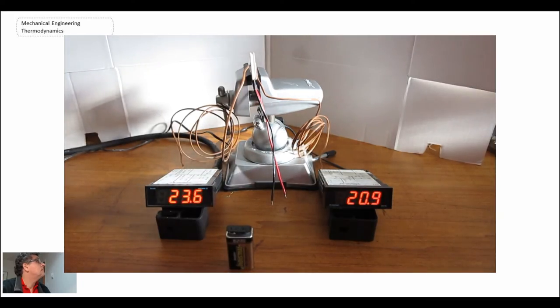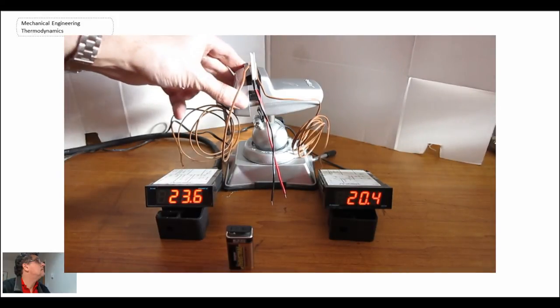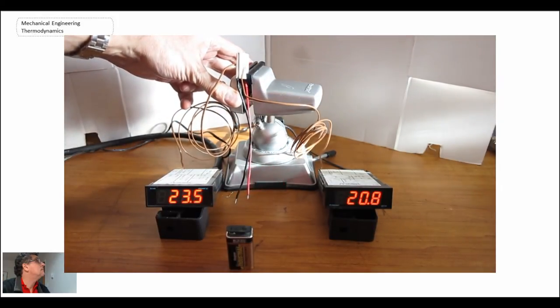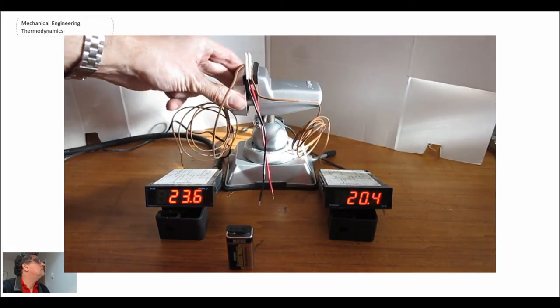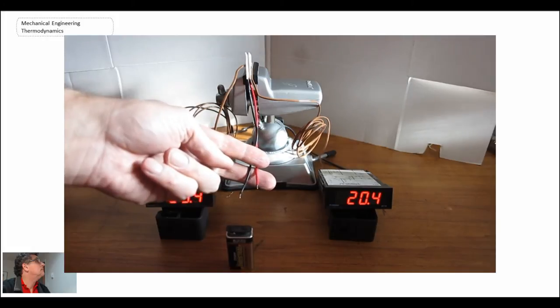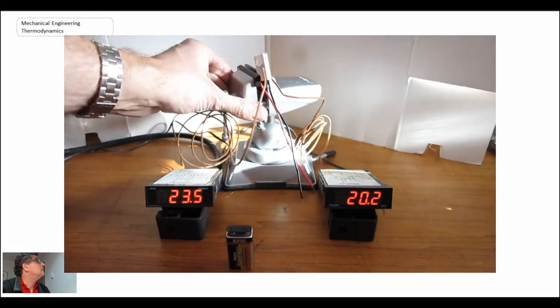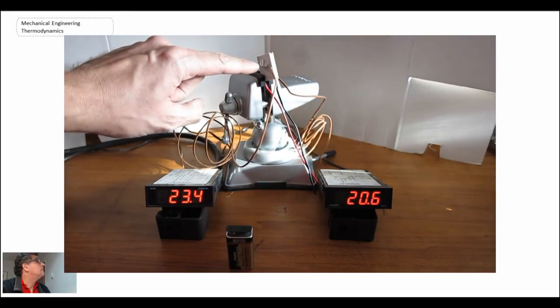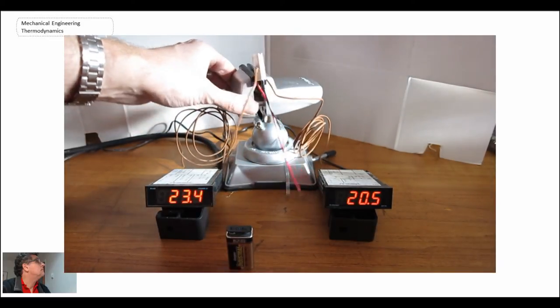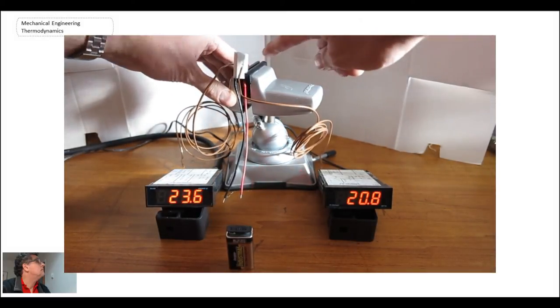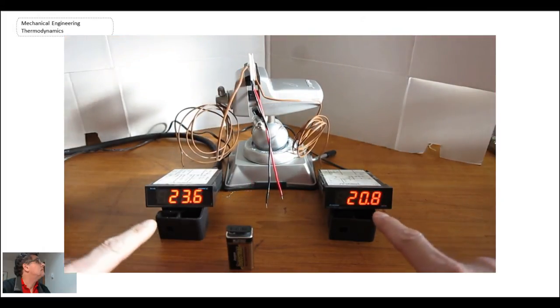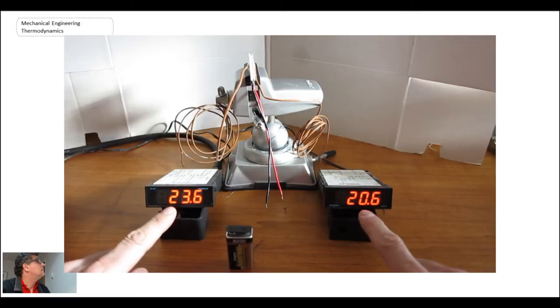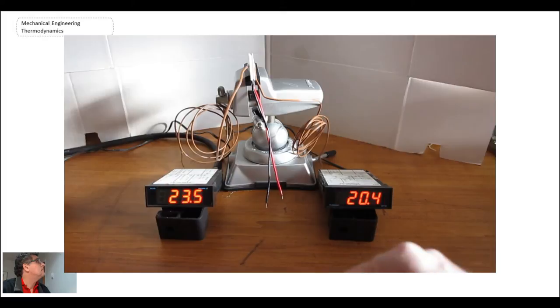We're now going to conduct an experiment where we have a thermoelectric cooler mounted in a vise, and there are two leads of the thermoelectric cooler coming out here. You'll notice that on each side of the thermoelectric cooler I have a thermocouple. The displays from the thermocouple are shown down here. There's a little bit of an offset between the two thermocouples, mainly probably because the zero is not perfectly correct.